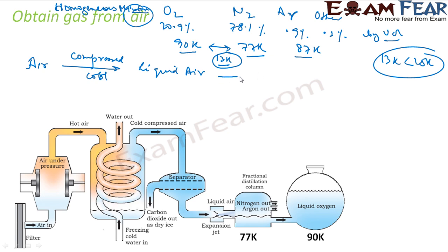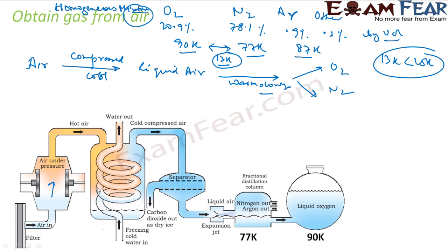Once we get liquid air, we warm it slowly in the fractional distillation column. As you warm slowly, gases separate out at different heights because they have different boiling points. The normal air is first put through a filter to remove all suspended particles, and then under high pressure and cold conditions it is made into liquid air.